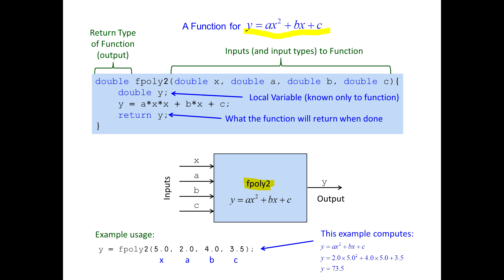Notice how we create the function: we give it the name — here it's fpoly2. This function is going to return something, so we have to tell it the type that it will return. In this case it's going to be a double precision floating point, or a double type.